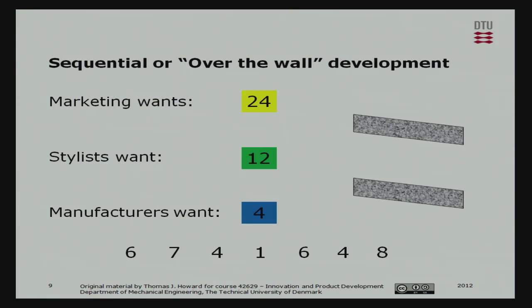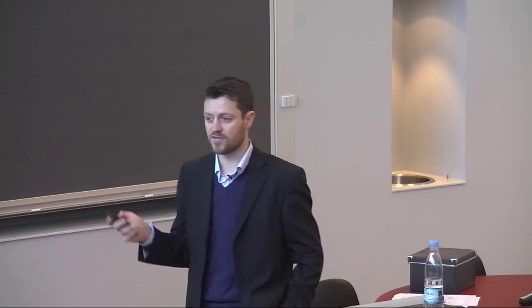Thinking of this as a metaphor: the marketing department wants to hit a score or performance characteristic of 24. They write a specification, use certain numbers, and pass the brief to the stylists or design department, who also have their own goal. They use up resources and commit constraints, then pass it to the manufacturers. Quite often the product that they pass over can't be made, or can be made but with inefficiencies. Let's try the exercise again in an integrated fashion.